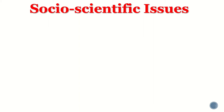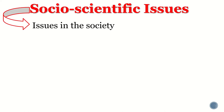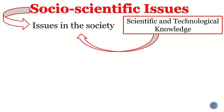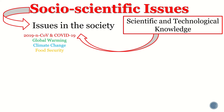The main concern of this subject is social scientific issues. When we say social scientific issues, these are the issues in society that can be explained by scientific and technological knowledge. Examples of these issues are COVID-19, global warming, climate change, and food security — common terms we encounter nowadays, each present in society with scientific explanations.